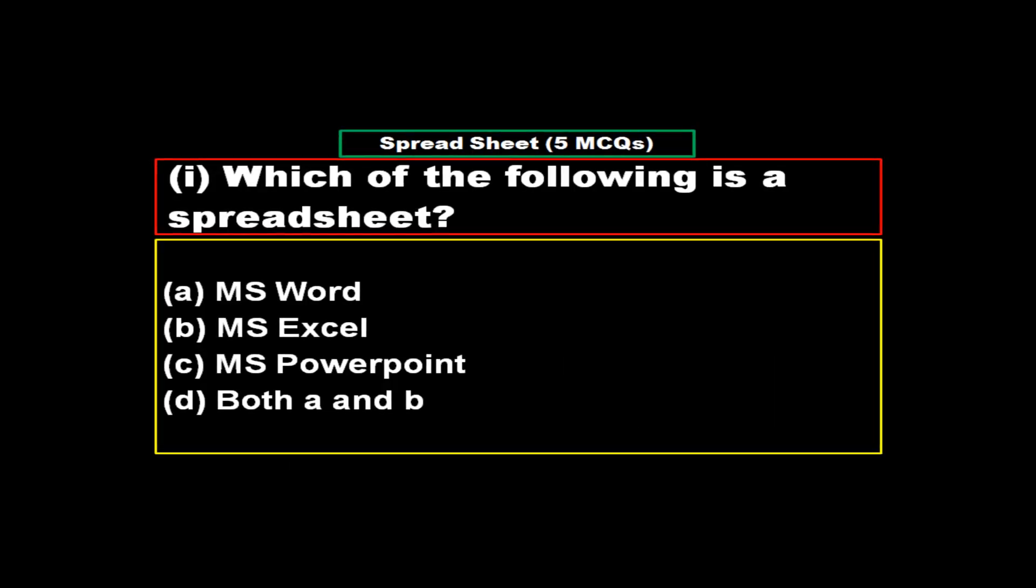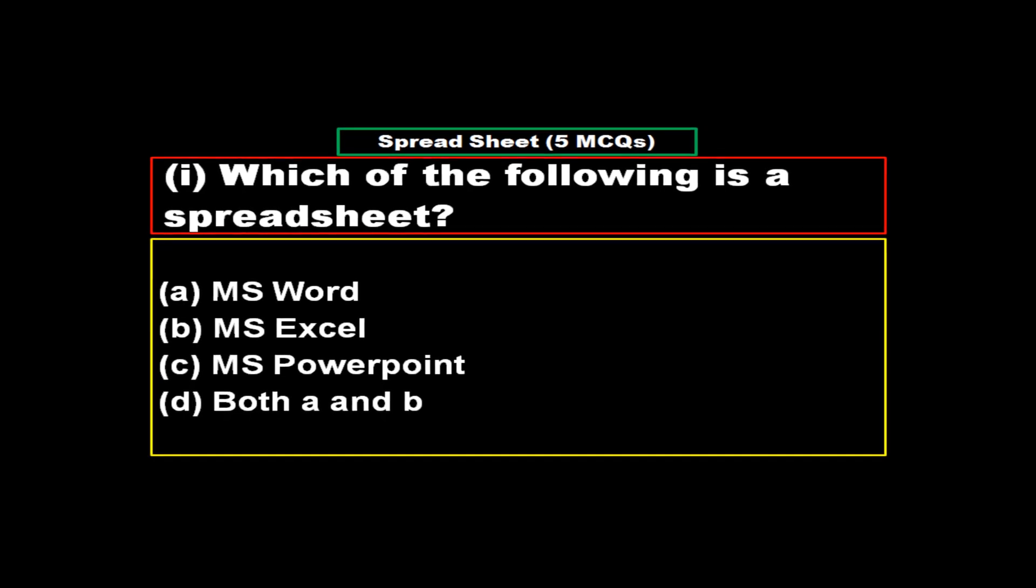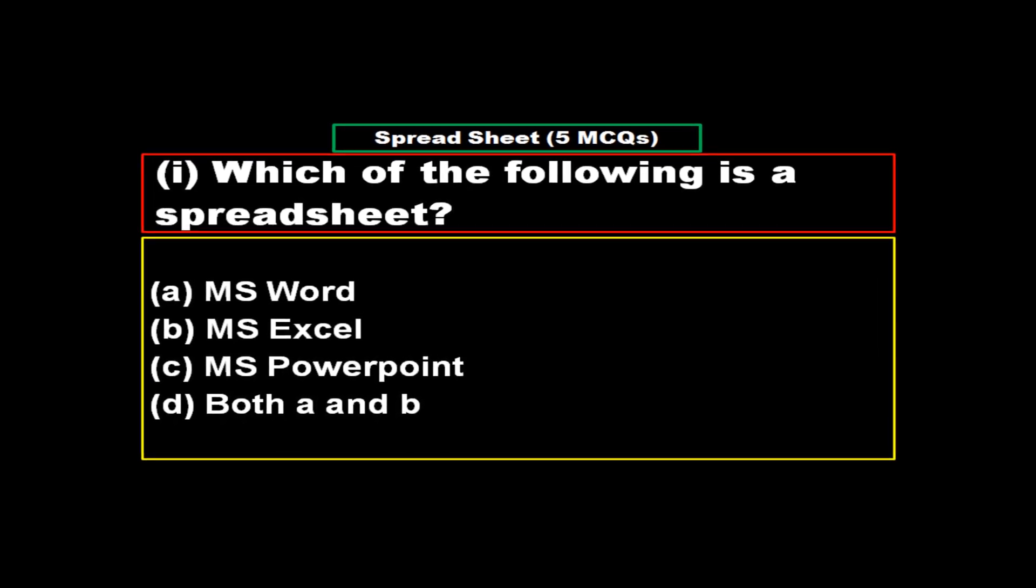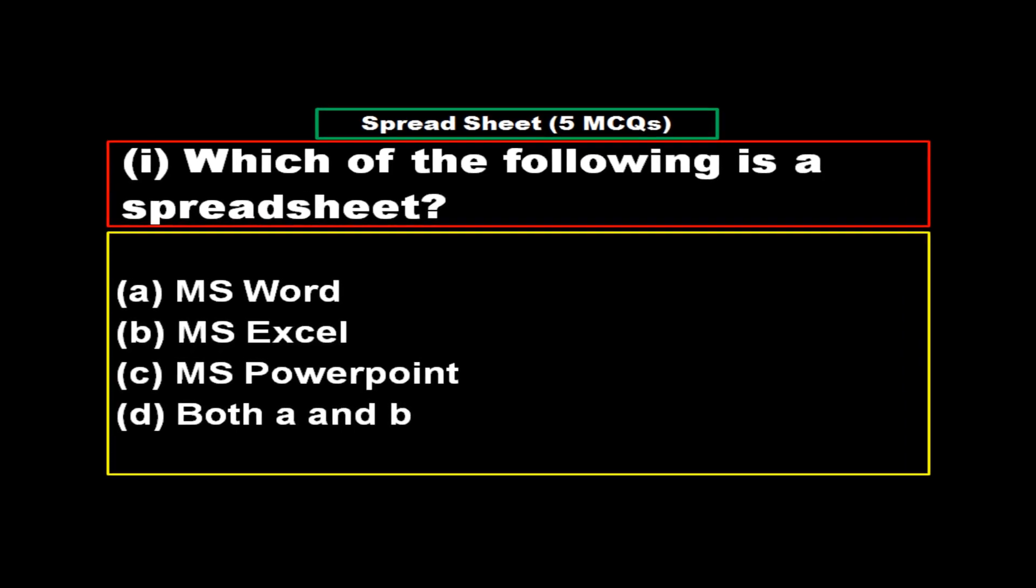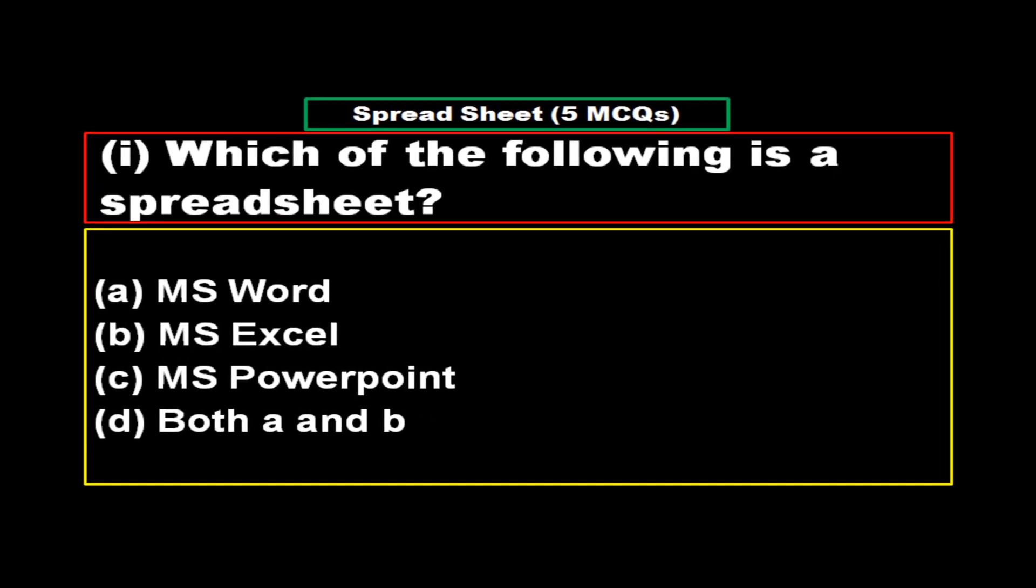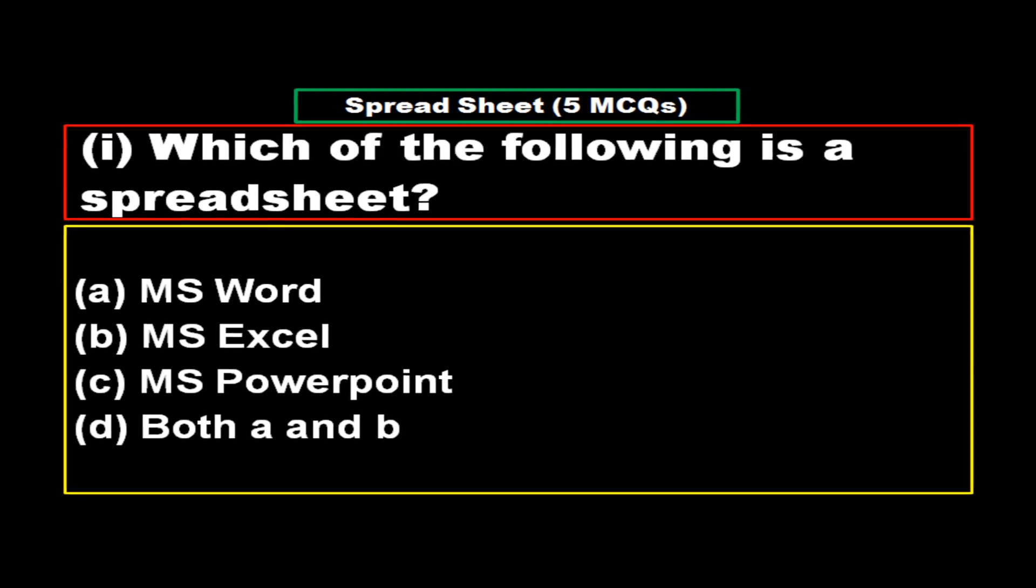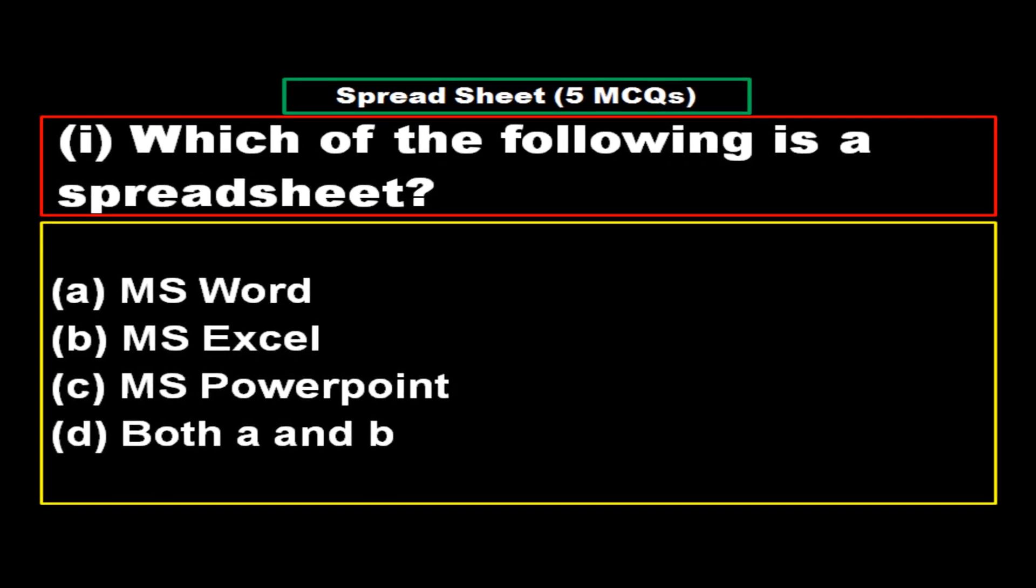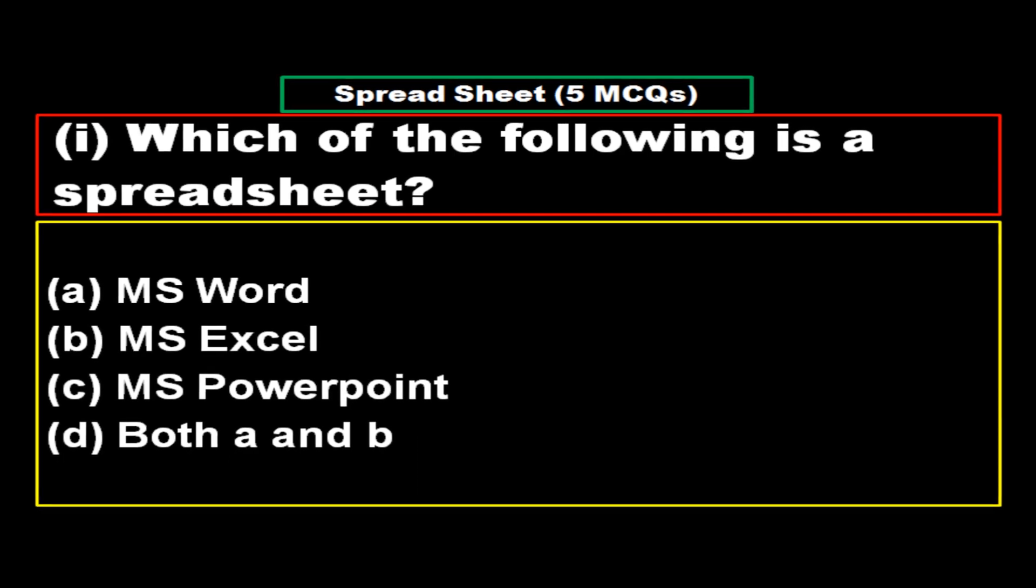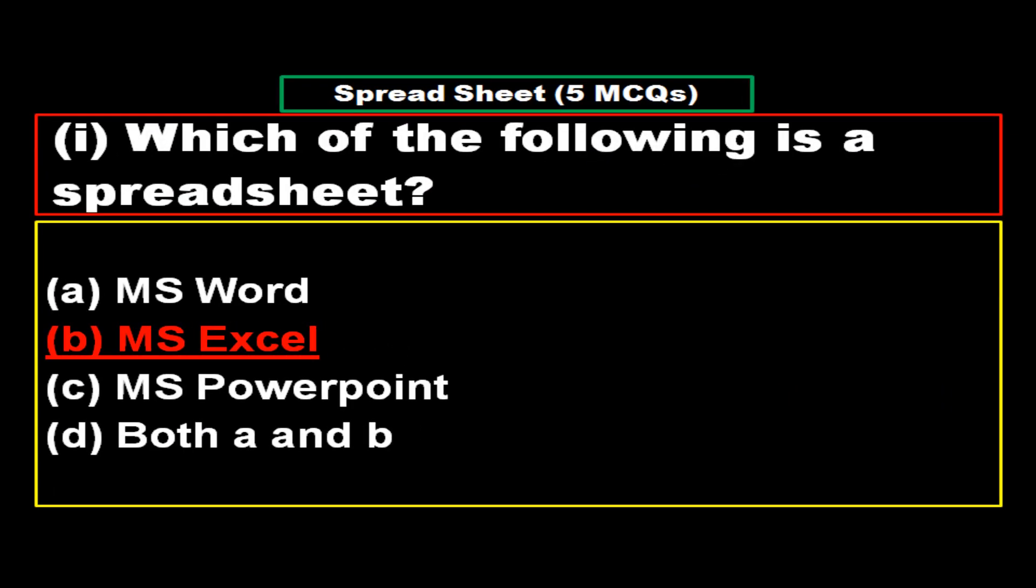Multiple choice questions from the topic spreadsheet. Let's start. Which of the following is a spreadsheet? Option A: MS Word, Option B: MS Excel, Option C: MS PowerPoint, Option D: Both B and A. And the right answer is Option B: MS Excel.